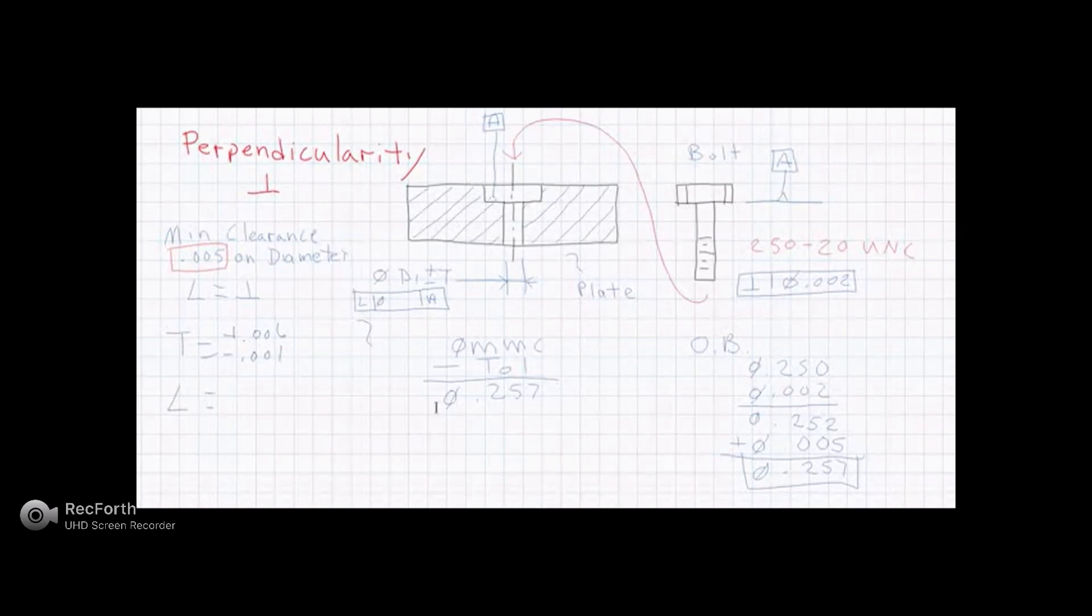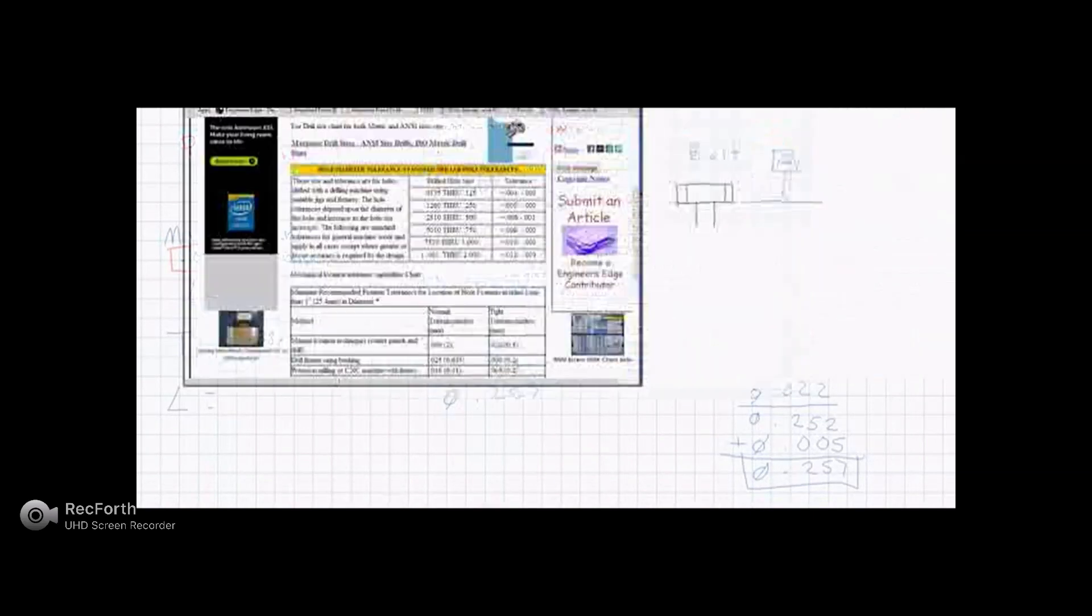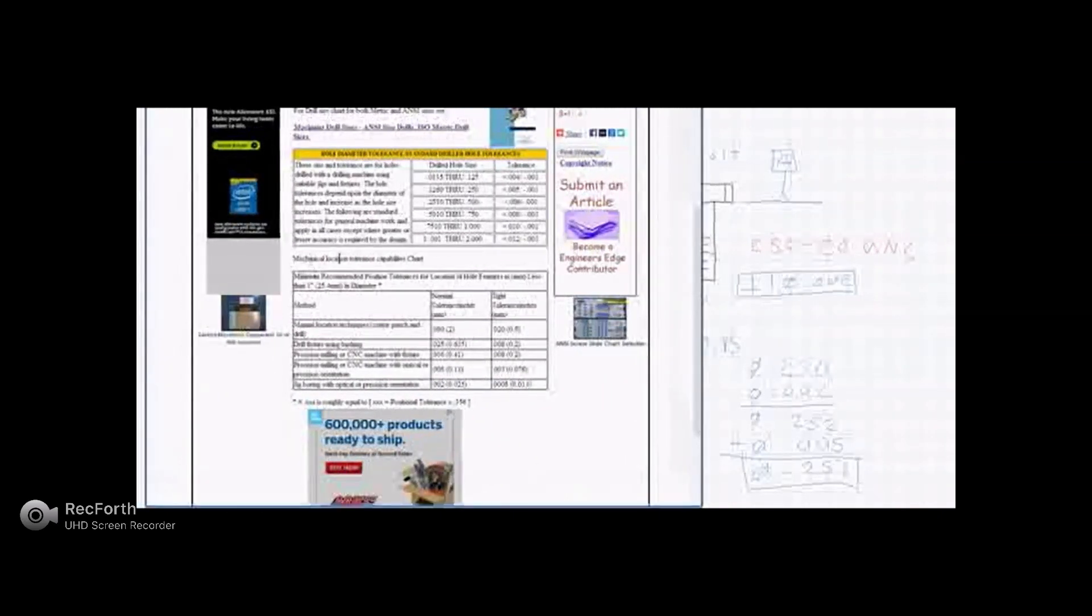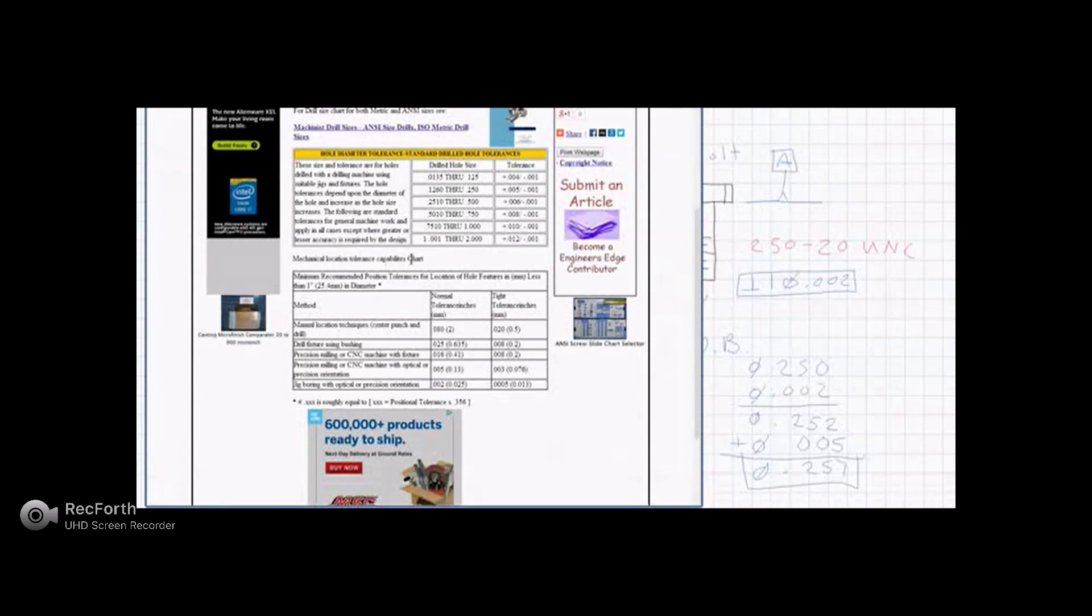So now I need to know what my perpendicularity is going to be. Well, going back to our chart, we give information, Mechanical Location Tolerance Capabilities chart. Now this is a recommended positional tolerance. However, we know that positional tolerances include orientation control as well. So it's safe to say that if we can as manufacture that hole feature at a positional tolerance, we can also as manufacture a perpendicularity tolerance to the same, if not a little bit better.